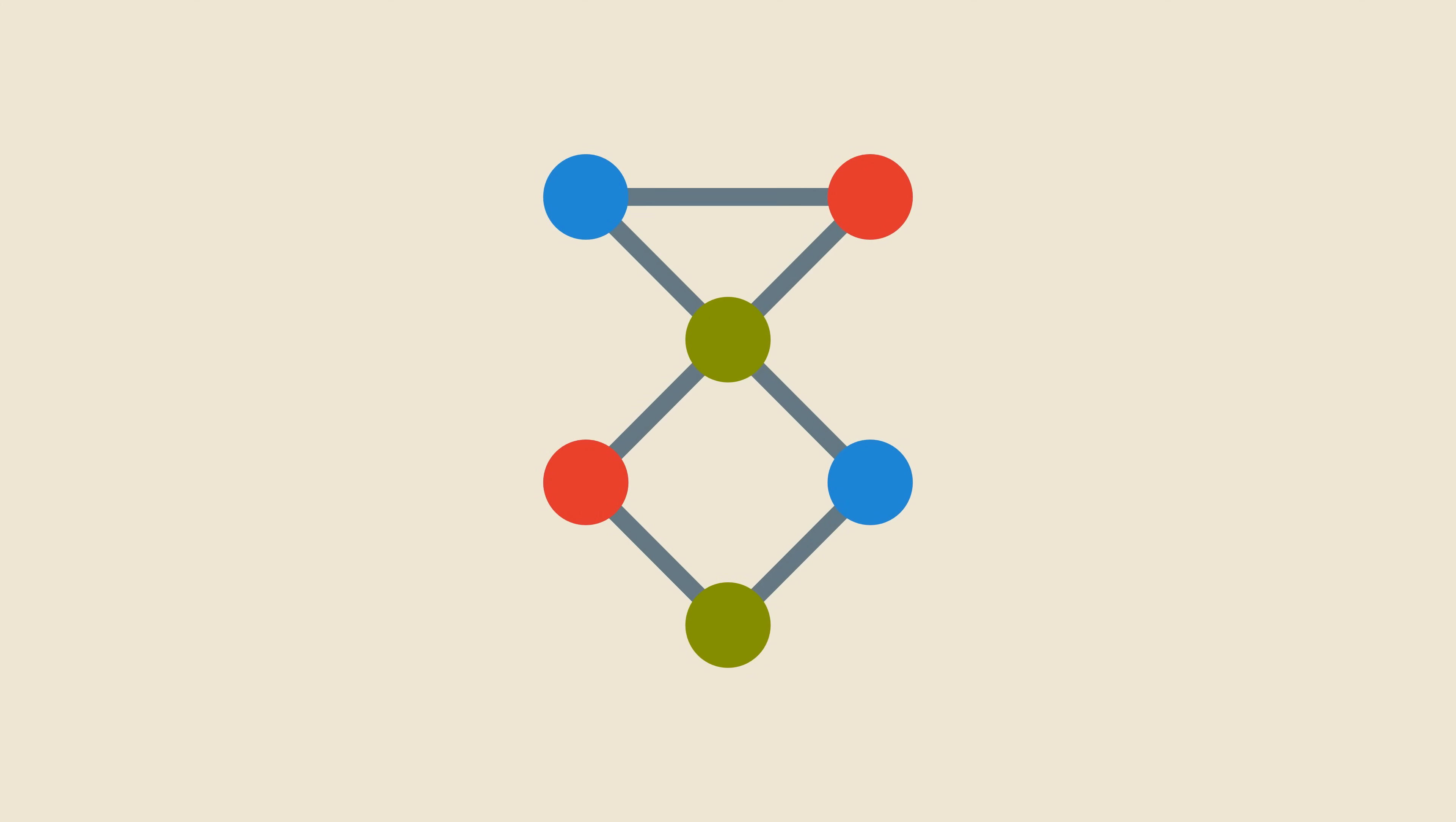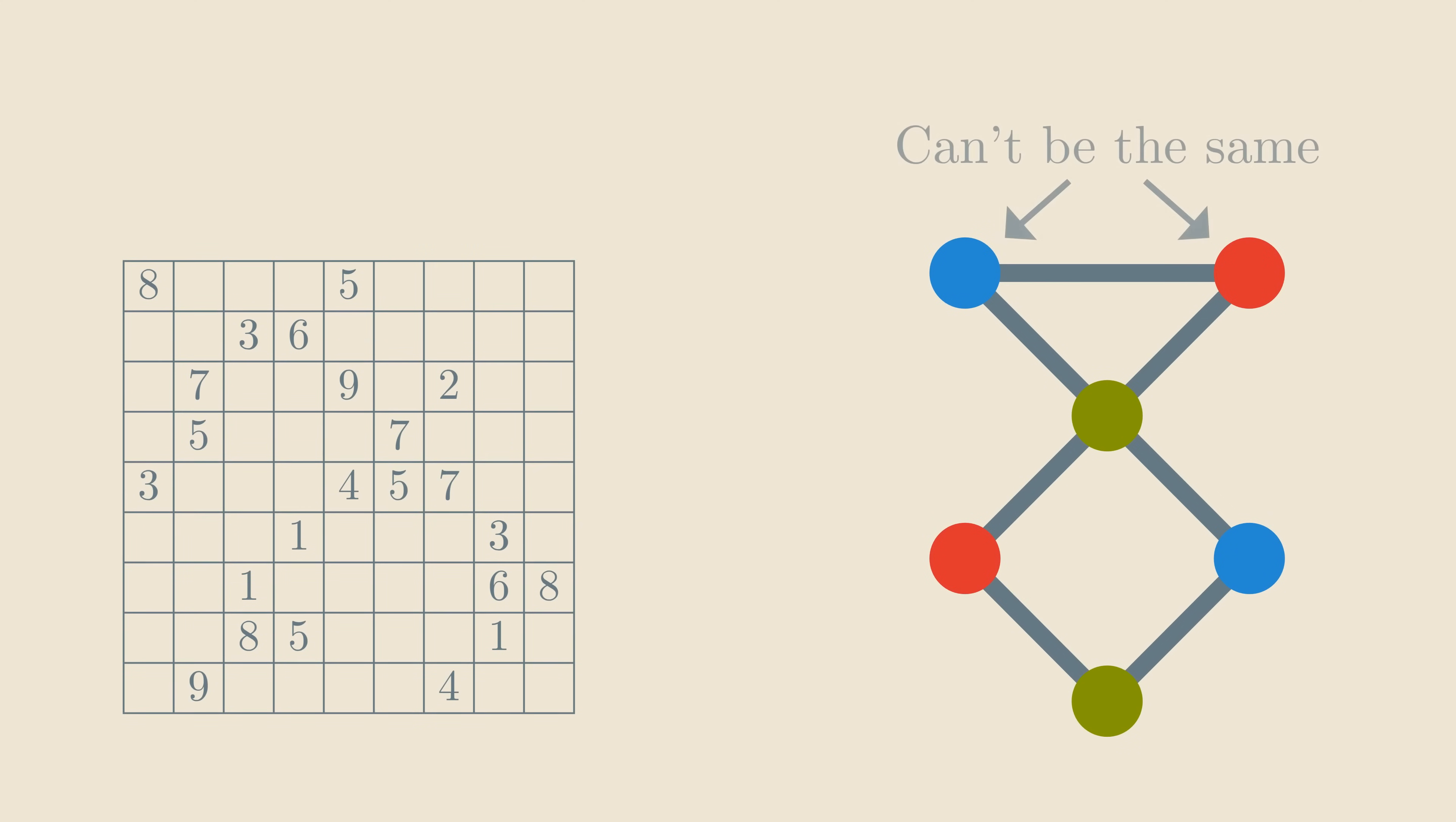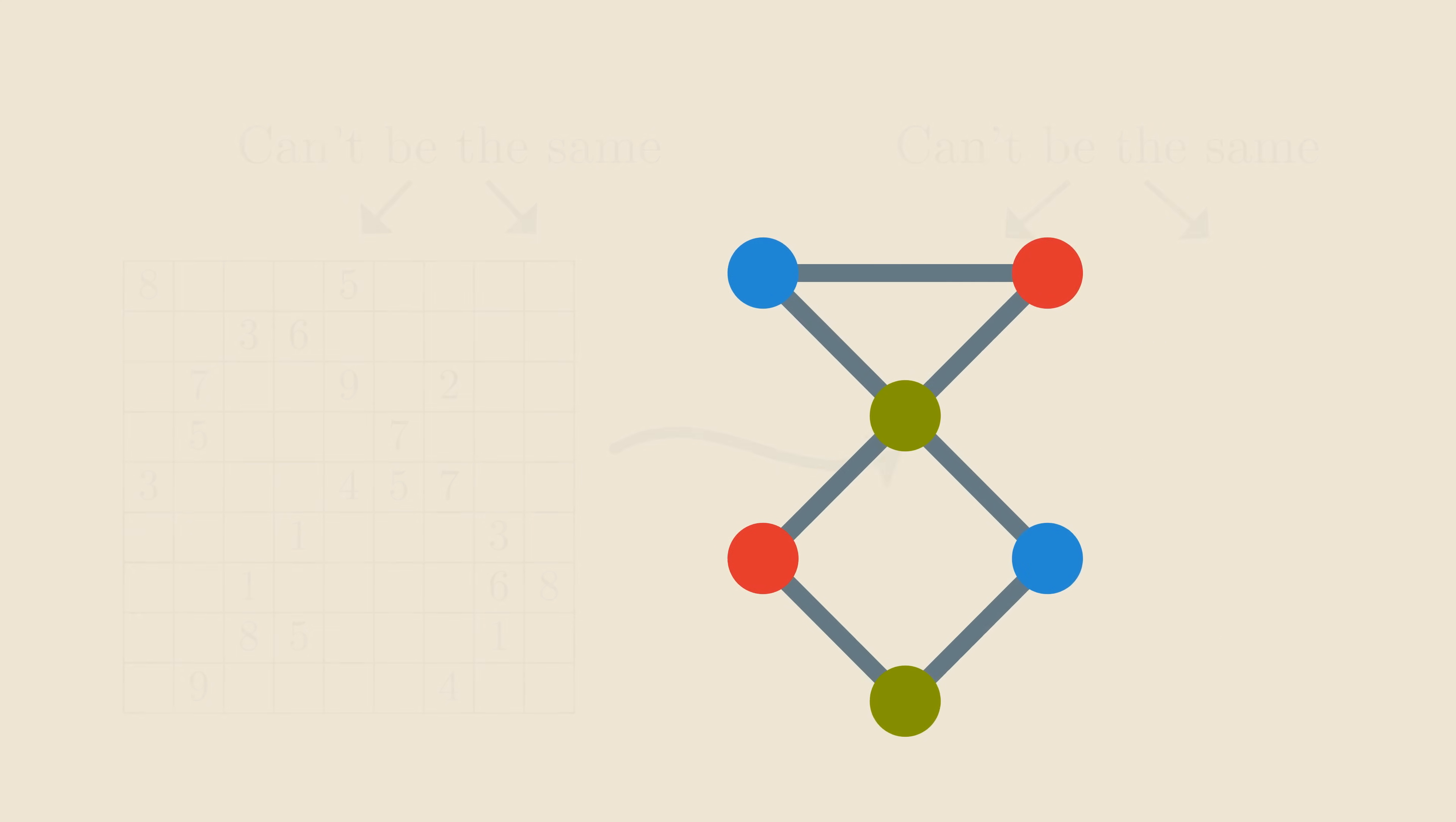For example, this is a valid coloring, but if we change the color of this node, it's no longer correct because this edge becomes unhappy. The coloring problem is similar to Sudoku in the sense that saying that two nodes must have different colors is analogous to the rule that two cells in the same row must have different numbers. But graph coloring is easier to think about because we don't need to distinguish rows, columns, etc. Soon, I'll show you exactly how to convert any Sudoku to a coloring problem, but for now, let's just think about graph coloring.